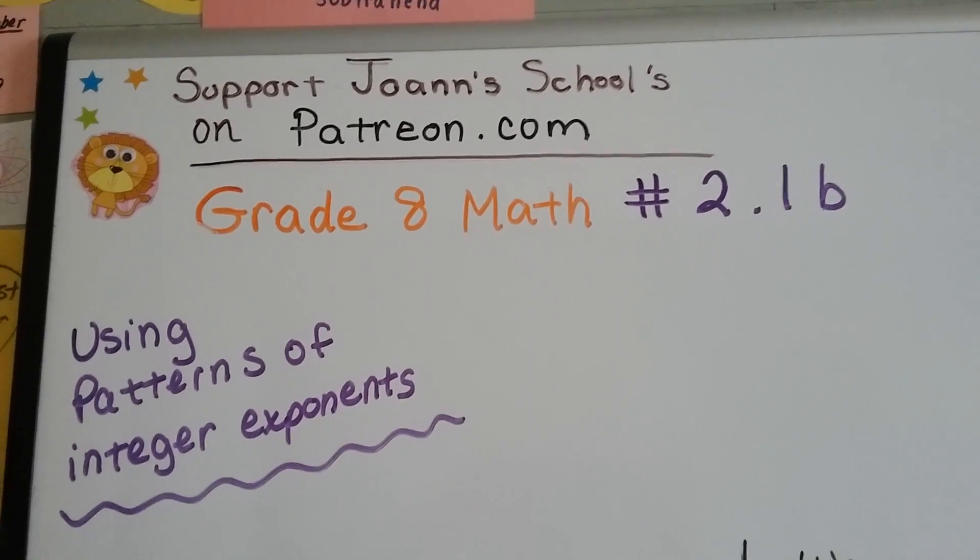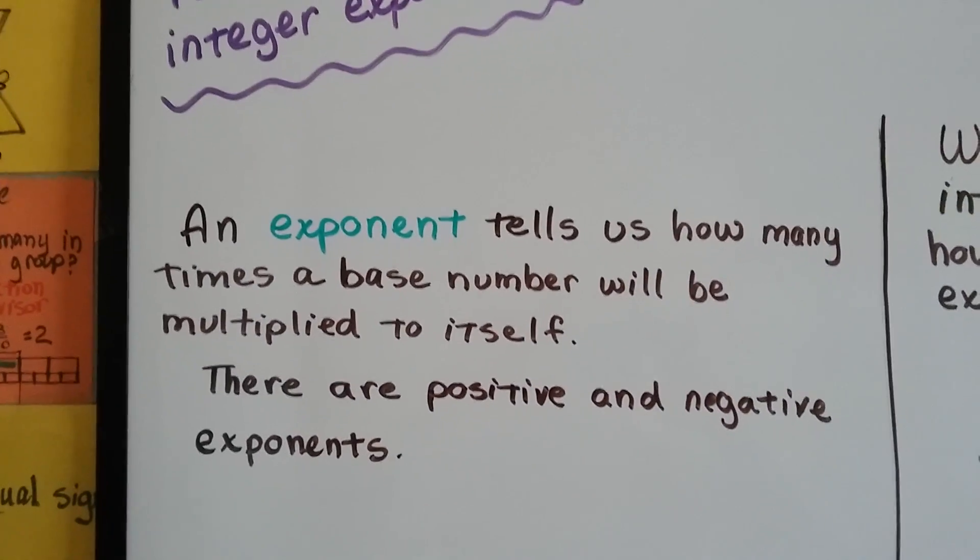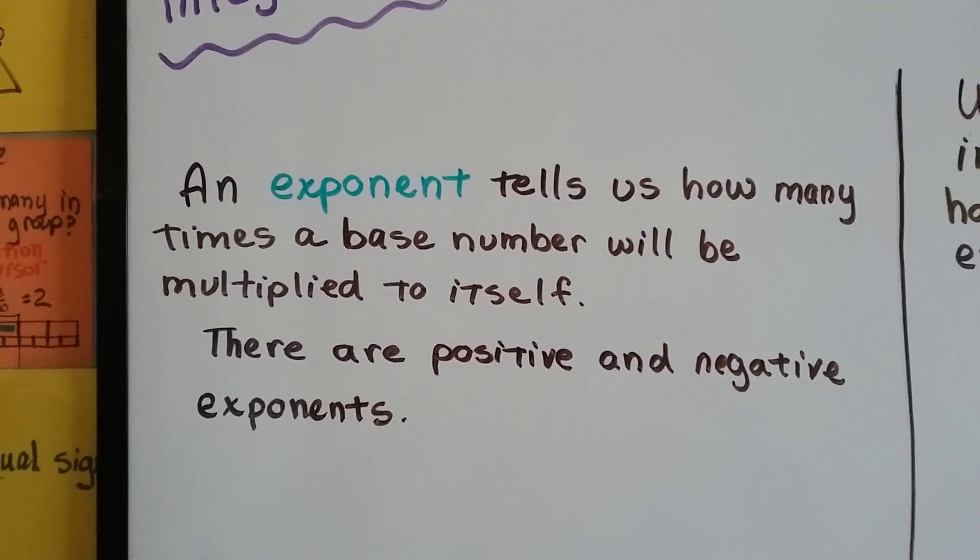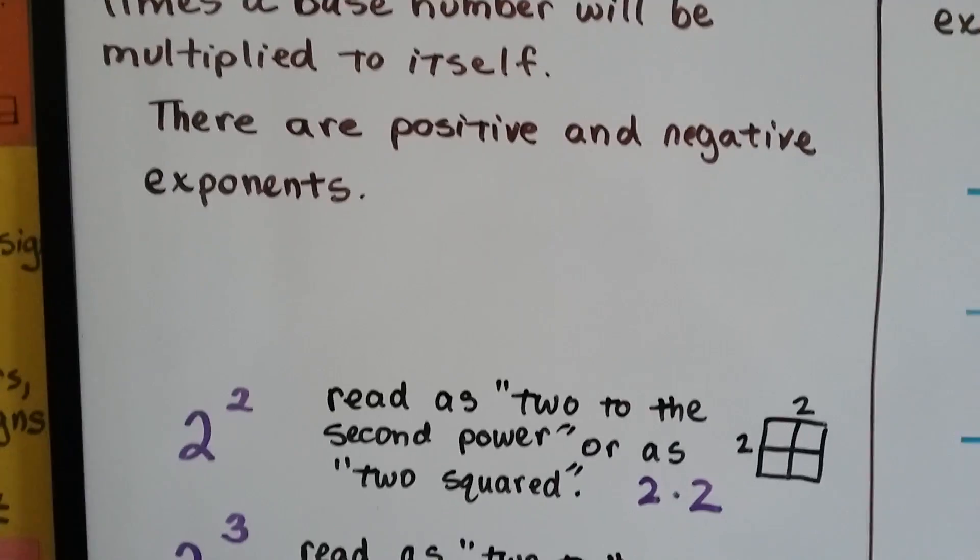Grade 8 math number 2.1b: used patterns of integer exponents. An exponent tells us how many times a base number will be multiplied to itself. And there's positive and negative exponents, as I mentioned in the previous video.